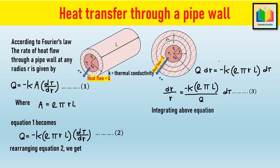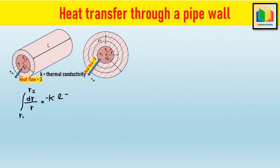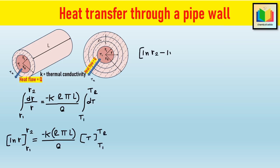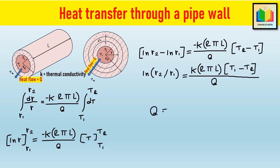Now integrating between the limits: when r = r1, T = T1, and when r = r2, T = T2. After applying the integration formula and solving, rearranging the terms gives: Q = k·(2πL)·(T1 − T2) / ln(r2/r1).